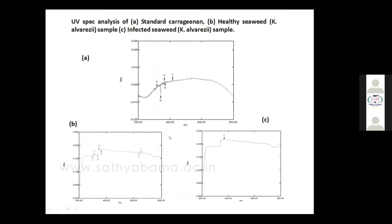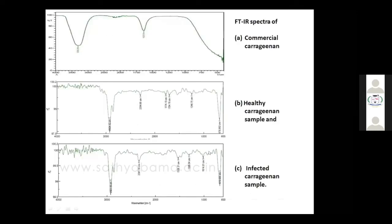In the UV spectral analysis, the first graph shows the standard carrageenan, which is commercially purchased, and you can see some different peaks. In graph B, it's the healthy sample — not infected by the disease — and we also got peaks similar to the standard. But in the diseased one, you can't see any peaks. This shows that carrageenan has been degraded.